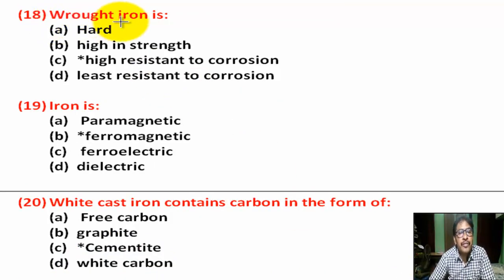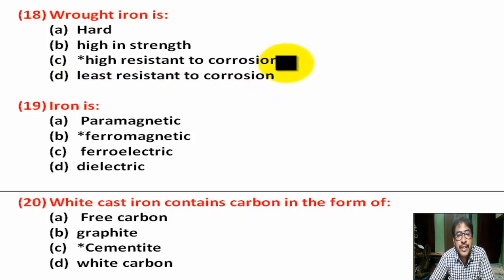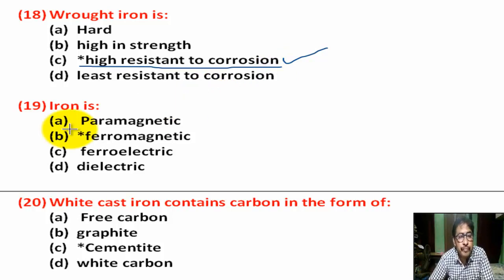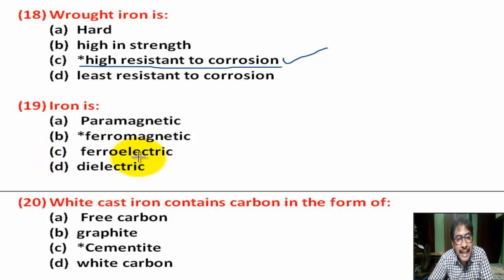Question number 18: Wrought iron is — Option A: hard. Option B: high in strength. Option C: high resistance to corrosion. Option D: least resistance to corrosion. Correct answer is Option C — high resistance to corrosion.